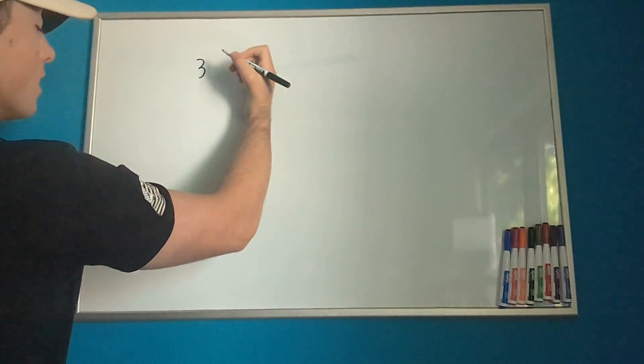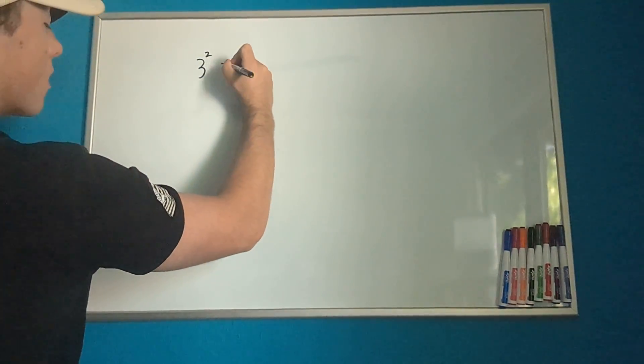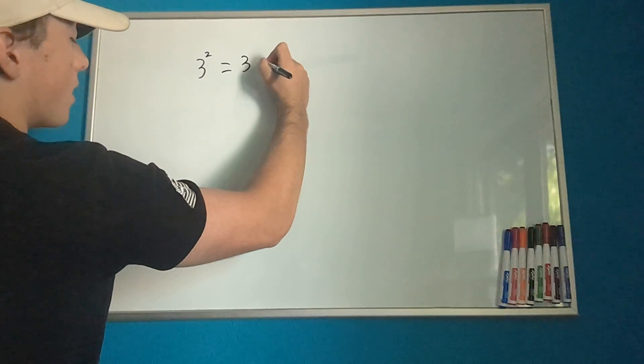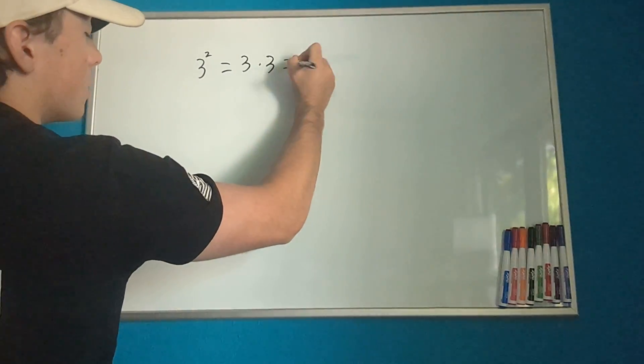We all know what exponentiation is, right? If we have 3 to the power of 2, that's the same thing as 3 times 3, which equals 9.